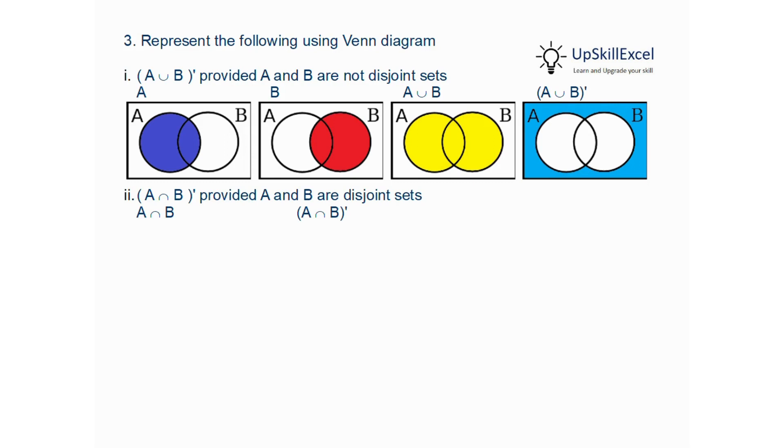Second question: A intersection B complement. So we see here that A and B are disjoint sets. That means there is nothing common, or there is no intersection between A and B. So we can represent A and B as two circles with nothing overlapping. And so when we take complement of the intersection, as intersection is nothing, we will get the complete area, which is U.